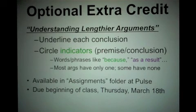and circle any indicators that is premise indicators or conclusion indicators. Those words or phrases we just talked about, like because, therefore, as a result, due to. I'll let you know right now that most arguments on this assignment have only one premise or conclusion indicator and some actually don't have any at all. So you're not going to be doing a lot of circling, maybe just one for each argument and for some none at all.